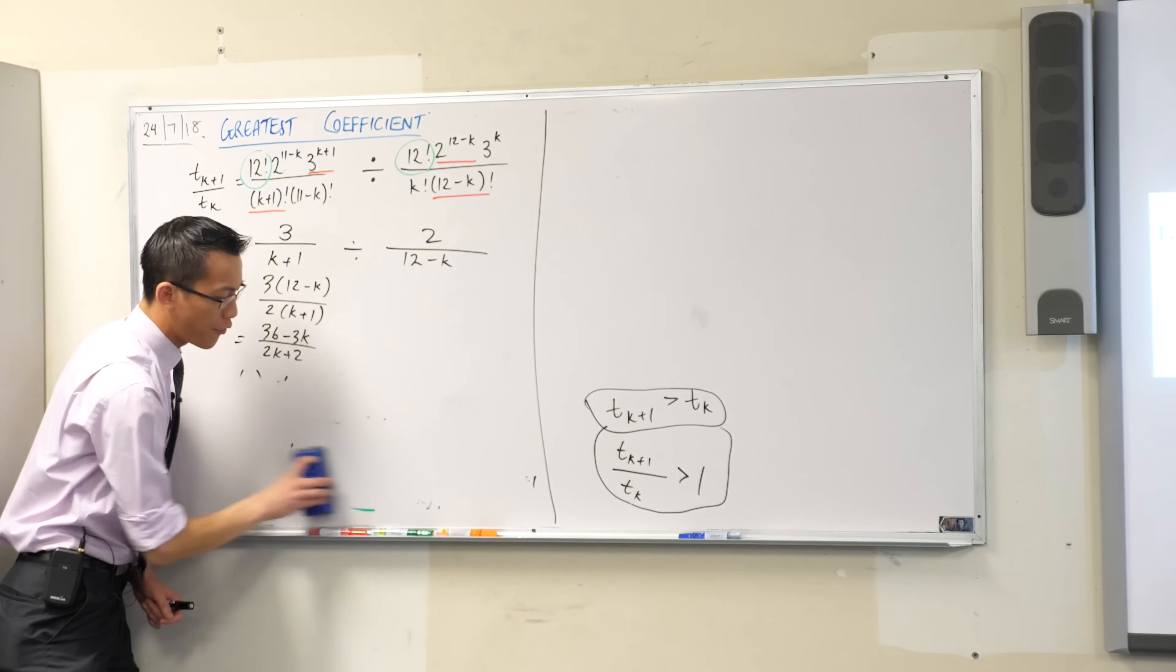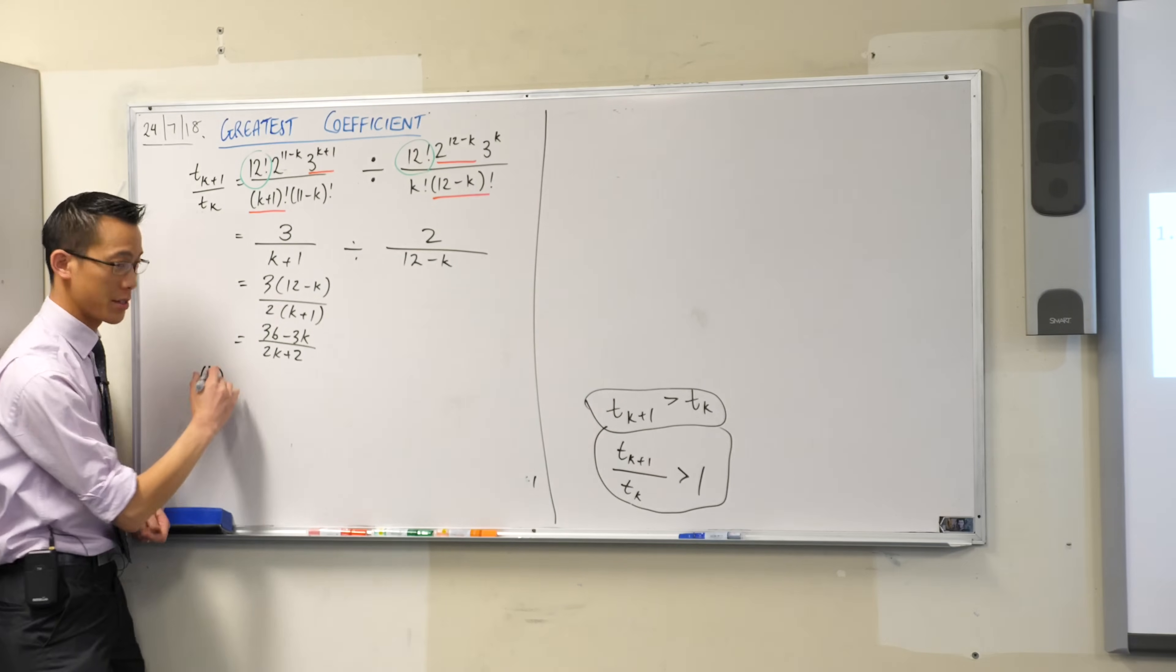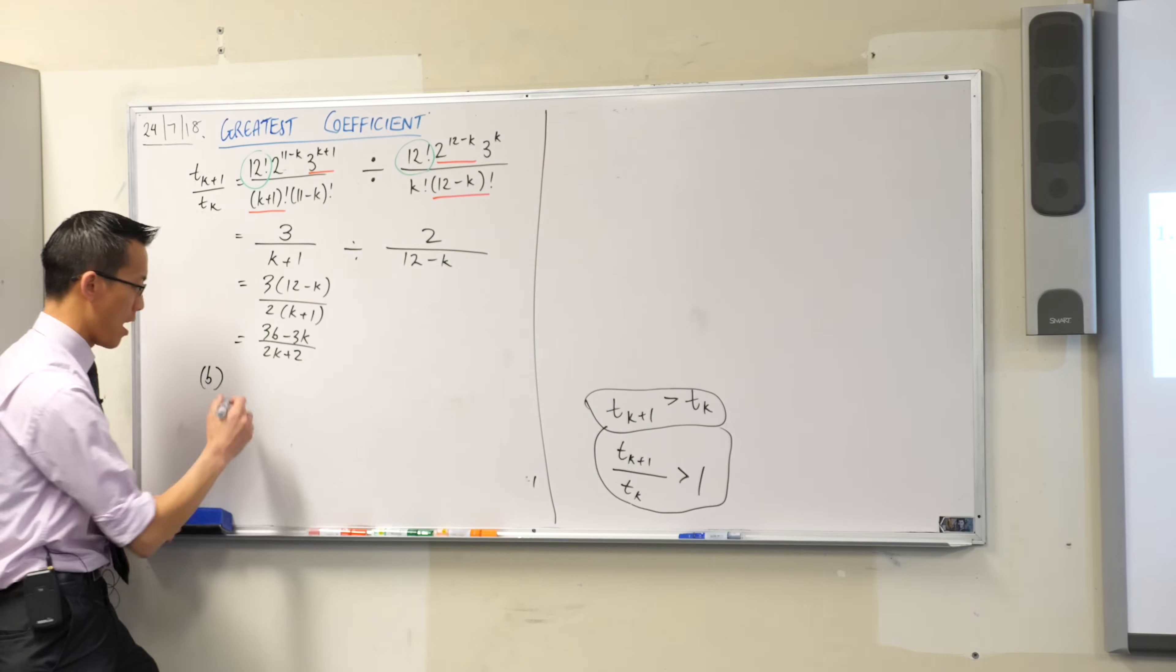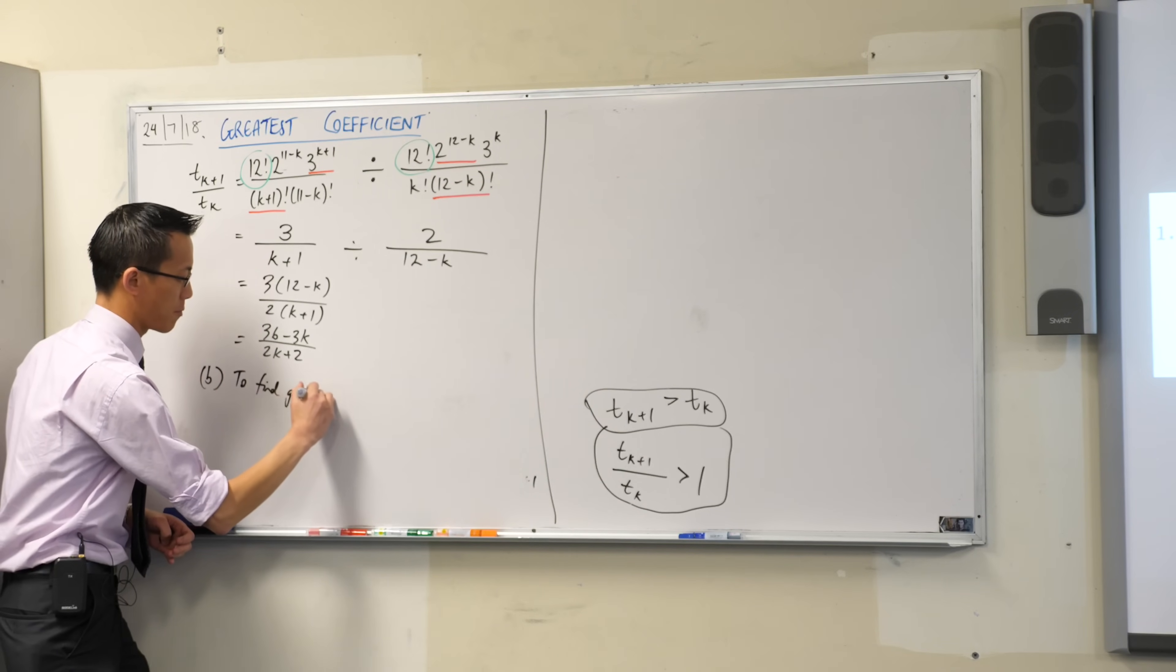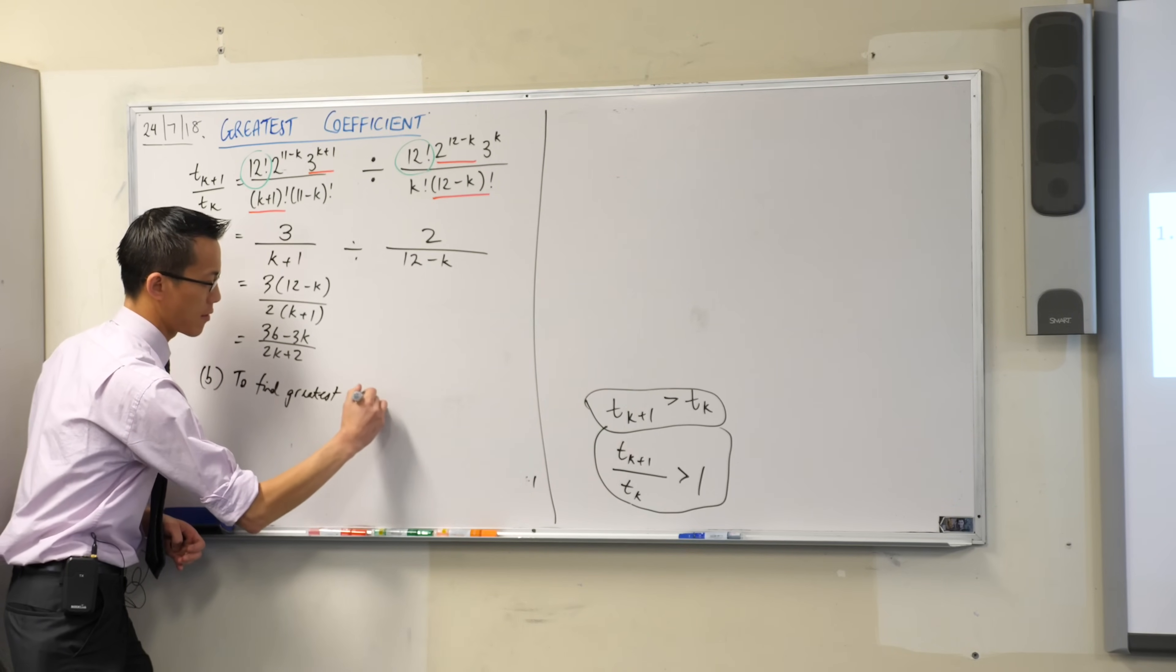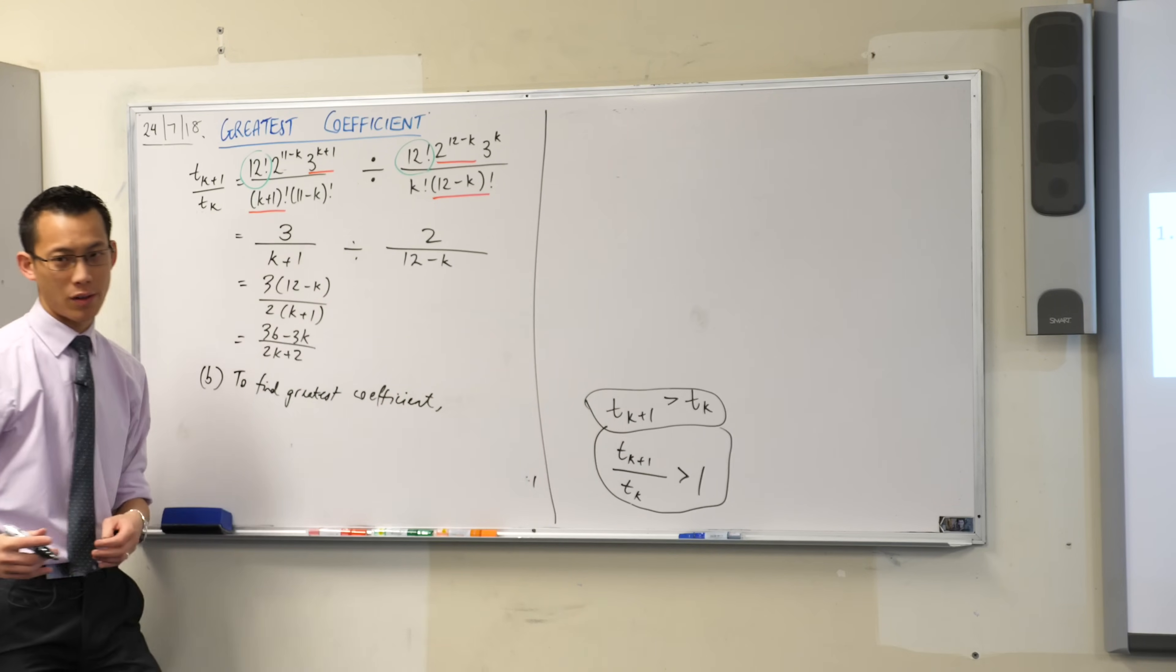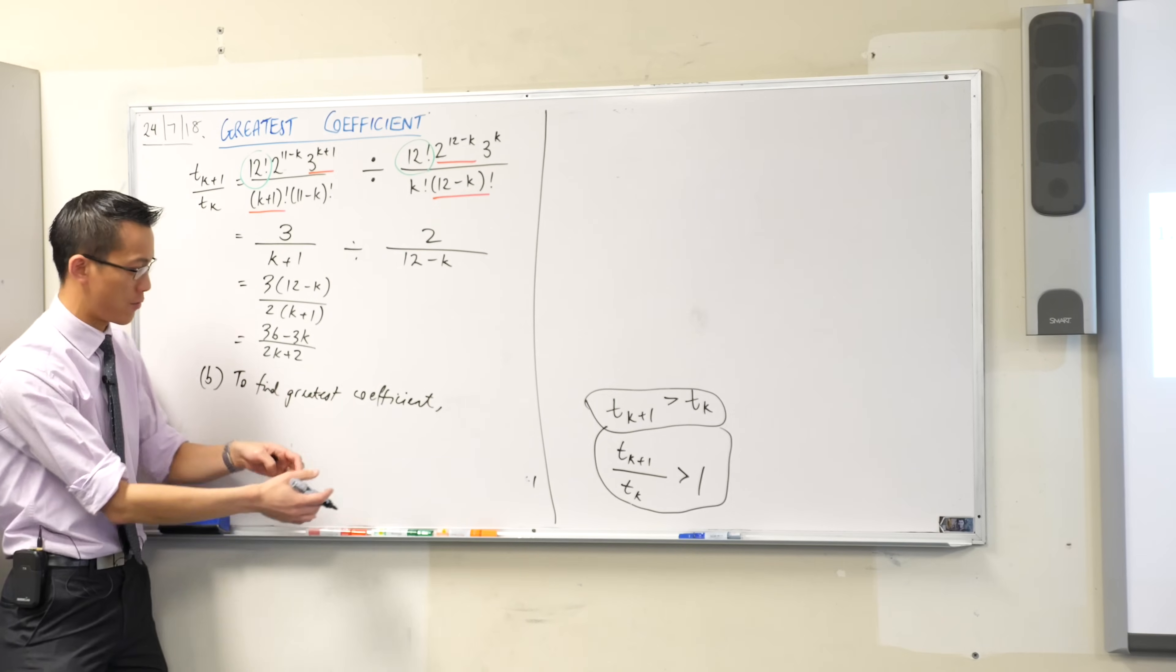What we are trying to find is the greatest coefficient. So I'm going to encourage you to write this very small phrase. All you have to say is, why are you about to write this inequality? I'm going to say to find greatest coefficient. Just so that my equations and inequalities and expressions come in a context of some kind, like this is why I'm about to write what I'm about to write.